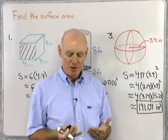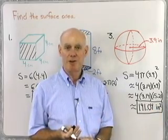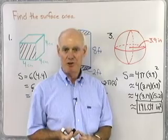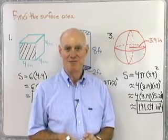So there we have a look at finding the surface area for three different objects: a cube, a cylinder closed at the top and at the bottom, and also a sphere.